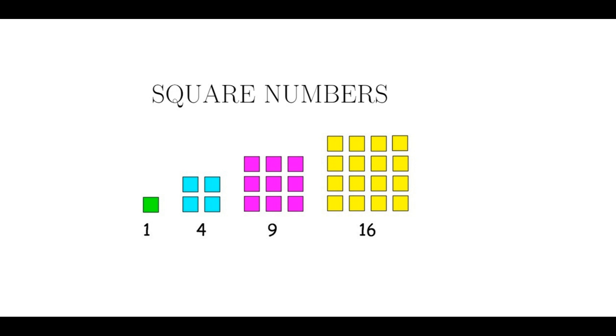However, what square numbers represent visually are the number of unit objects arranged in a square of length n. There are n rows with n items in each row, so there are n times n total objects. However, what would happen if we decided to use a different shape instead of the square?